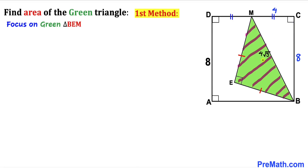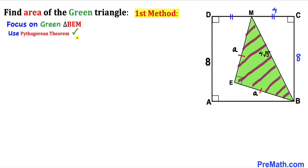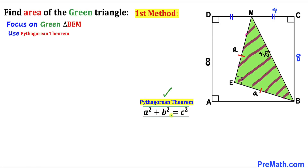Now let's focus on the green triangle BEM. We know it is an isosceles right triangle, since side EM equals side EB. Let's label each of these equal legs as lowercase a. The hypotenuse of triangle BEM is 4√5.